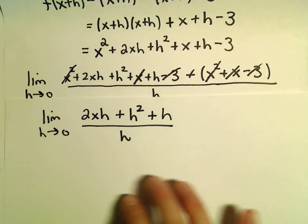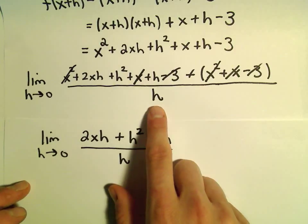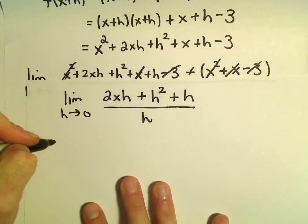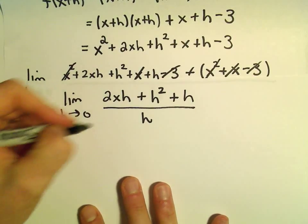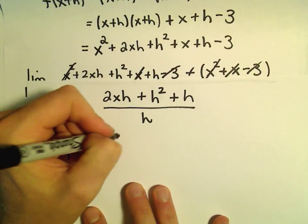And now, what we can do is, again, we've got a limit problem. Notice the whole time, again, if you plug in h equals 0, we're going to be dividing by 0, and that's bad. You will also get 0 in the numerator if you check. Okay, but now, we can factor the h out of the numerator.